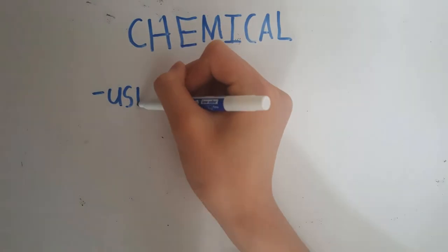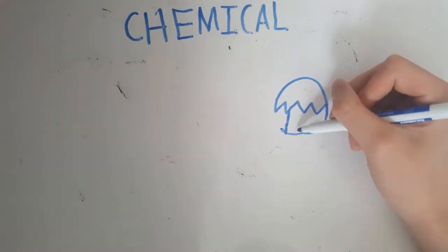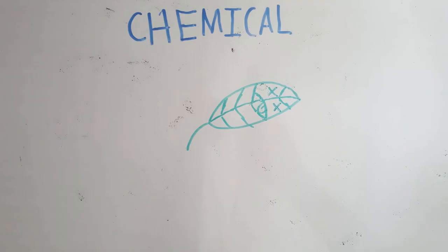Let's start with chemical. Chemical control involves using pesticides and herbicides to control an invasive species. A pesticide is a substance that will kill an animal when ingested. And if you're wondering what a herbicide is, it's basically the same thing, but for plants.